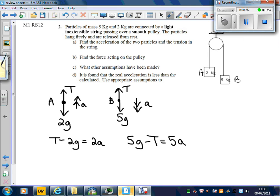The force acting on the pulley. The pulley is attached to some fixed point, and it feels these two tensions acting downwards. So the force acting on the pulley is equal to 2T.